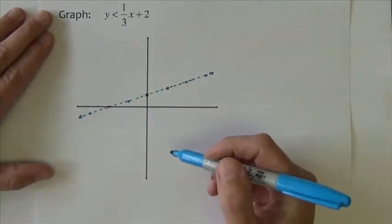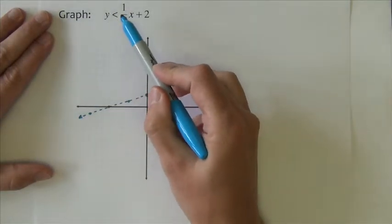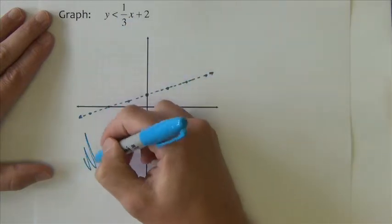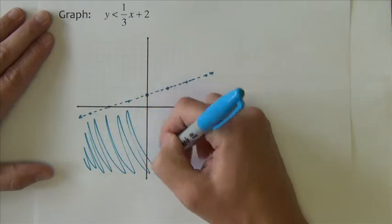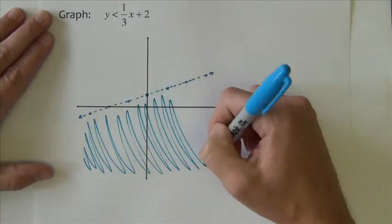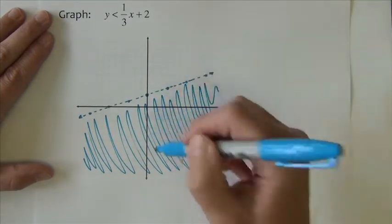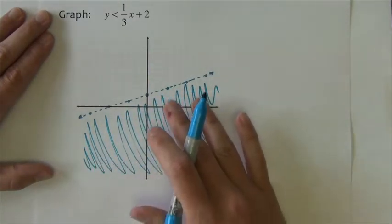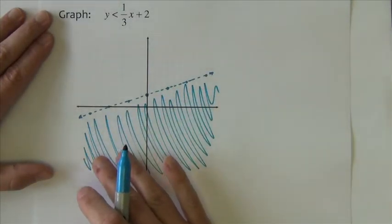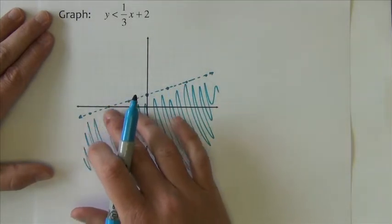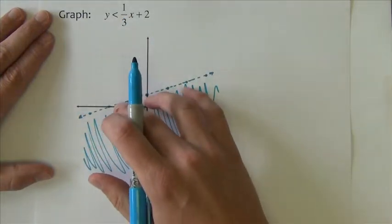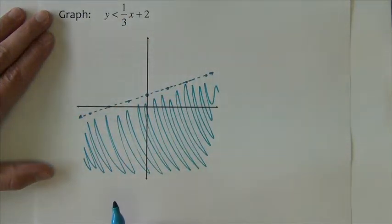Now we need to shade, we want less than. The less than side implies beneath the line, so we're going to shade everything down here. Any point down here would satisfy that inequality. Because this line is dashed, if you pick a point on this line, it's not going to work. Only the points that are beneath the line work in this case.